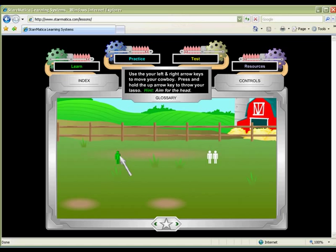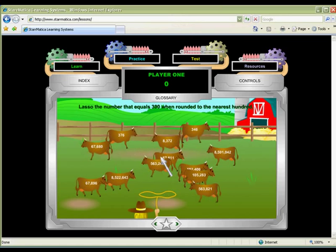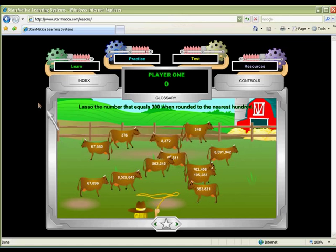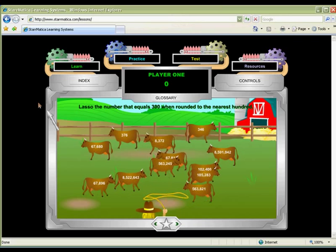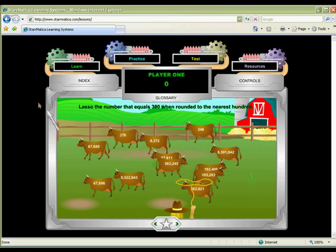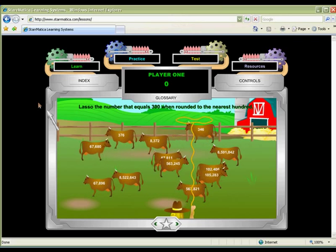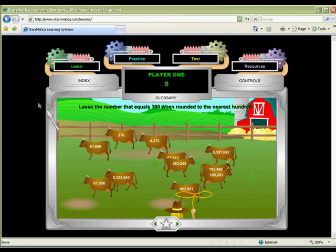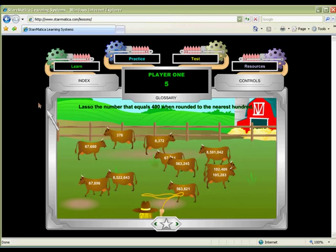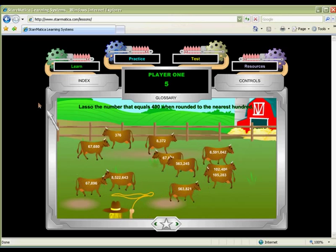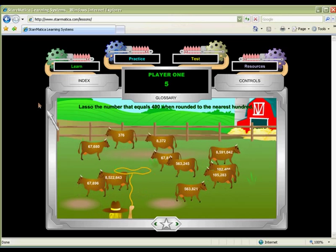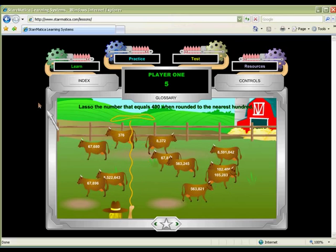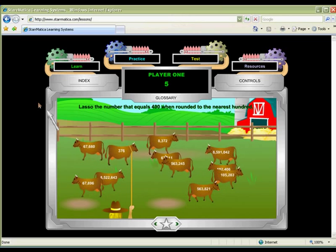Yee-haw! Your students will be entertained by the roping animation and funny sound effects in this rounding game from Starmatica.com. This challenging game asks students to identify a number that, when rounded, would equal the given number. Gallop across the screen to position your cowboy, then throw the lasso to rope the cow marked with the correct number.